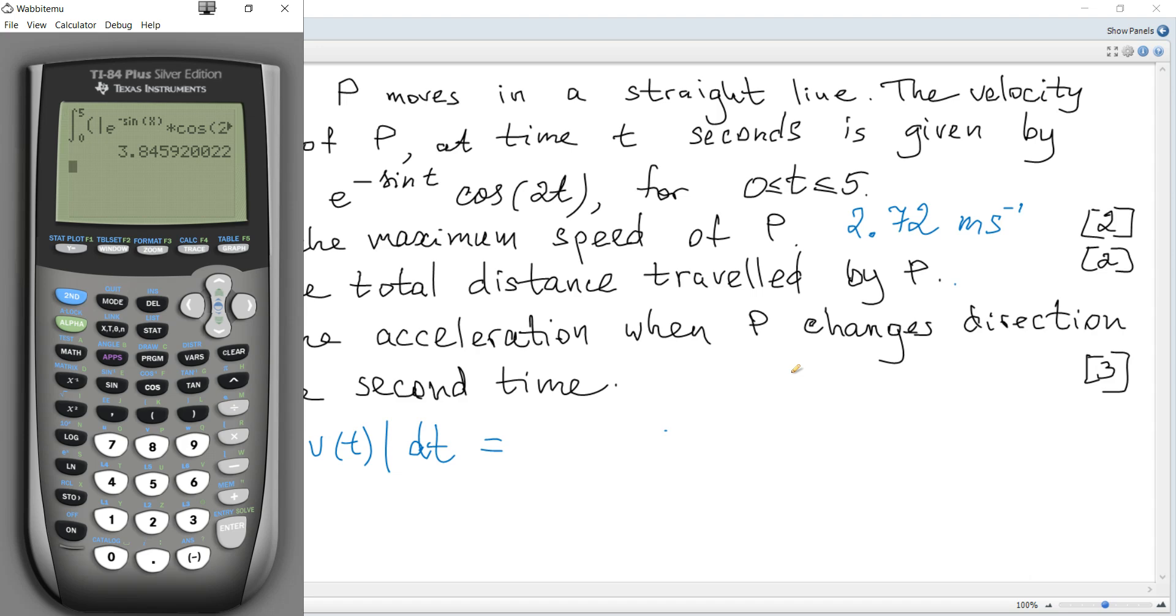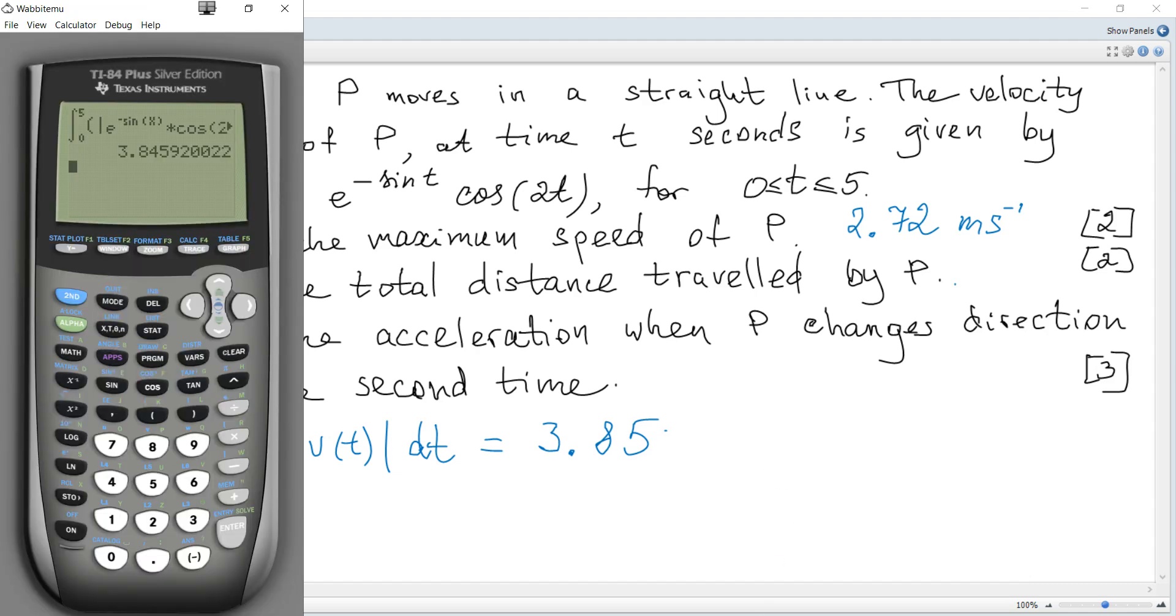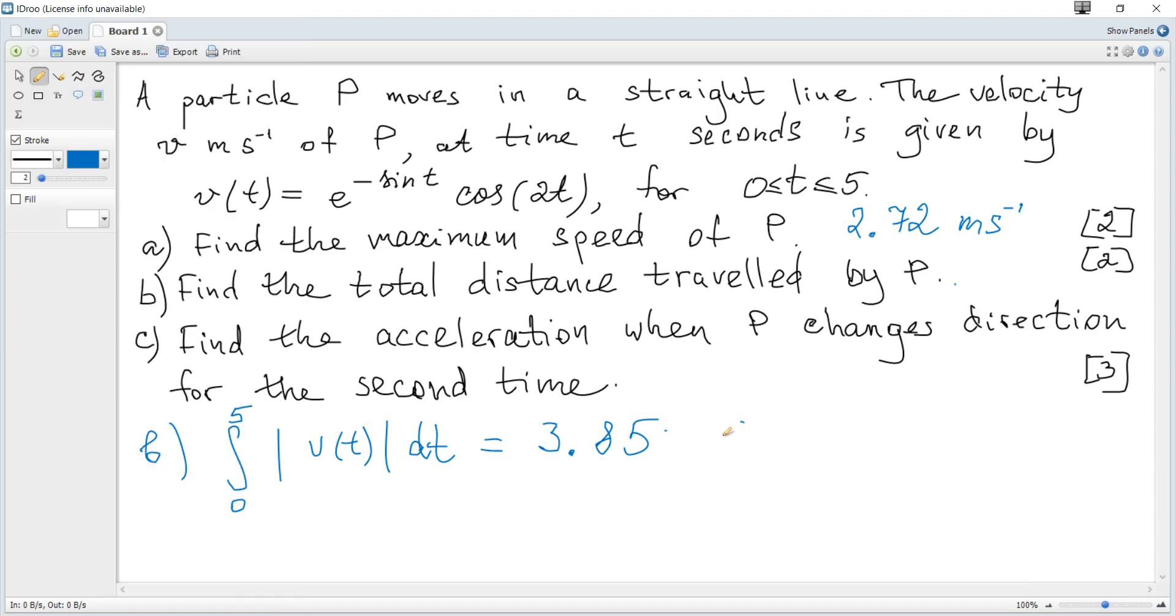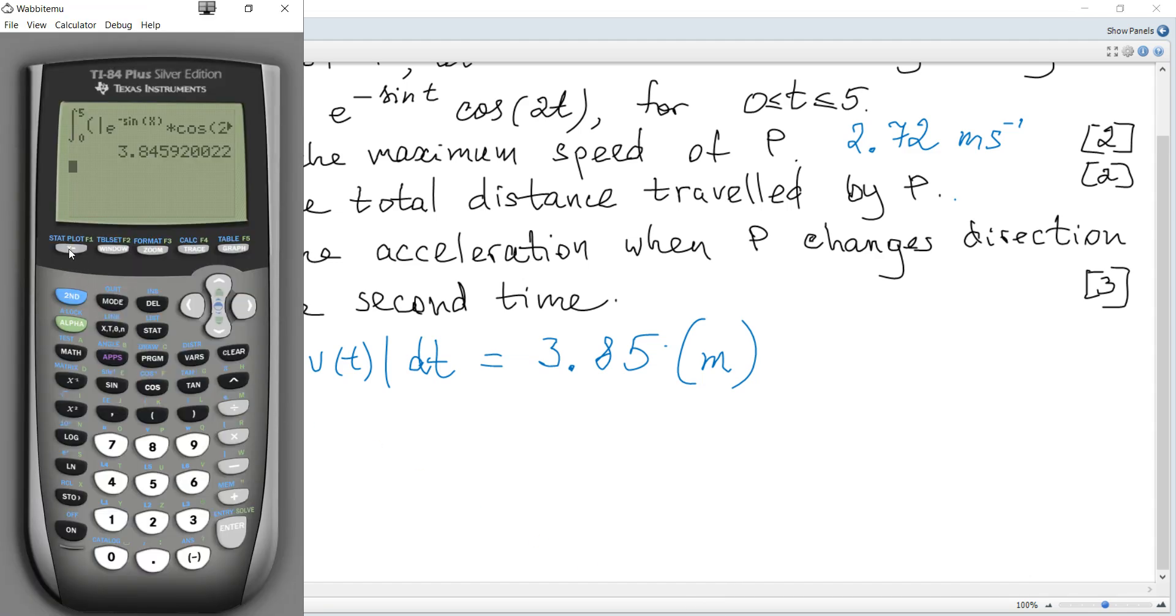It changes direction at the point where velocity is zero. So the answer for the previous question is 3.85 to three significant figures, meters. Now, using the graph again, you can see the moments where it changes direction—the first time and the second time. So we need the second x-intercept.